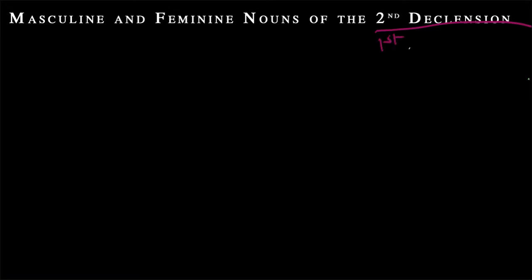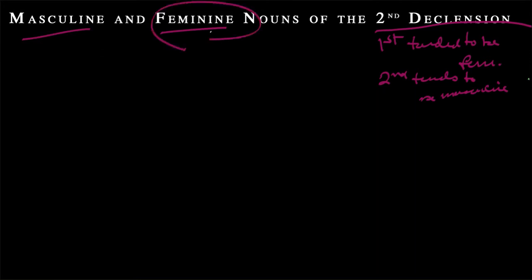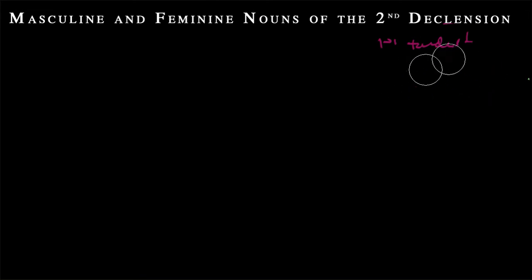Just like the first declension tended to be feminine, we're going to find that the second declension tends to be masculine. But as the title of this unit suggests, we do have both. And just as there were masculine nouns of the first declension, we're going to see some feminine nouns of the second declension. These are rare, but we're going to teach them to you first so that you're disabused of any notion that just because it's second declension it's masculine, or just because it's first declension it's feminine.